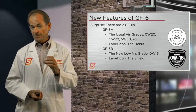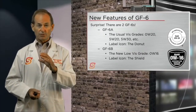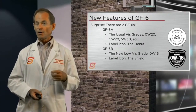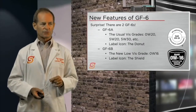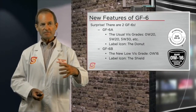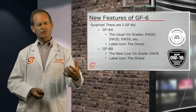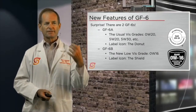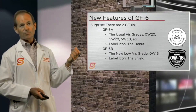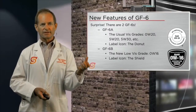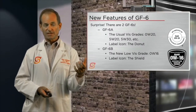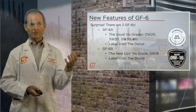Hopefully you won't go into a store, grab a bottle off the shelf without noticing it has a shield on it and not a donut. Notice how the 0W16 is even more prominently displayed on there — that will hopefully grab people's attention that this is a different viscosity grade than what they're used to getting.